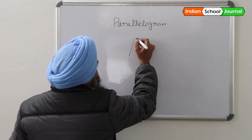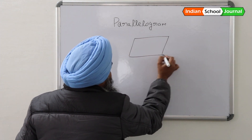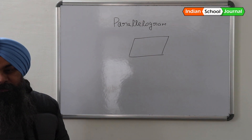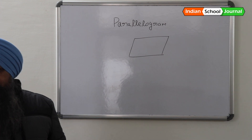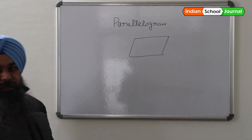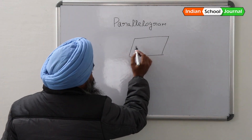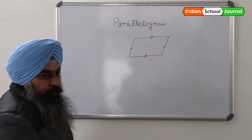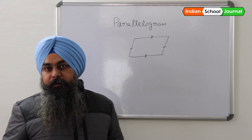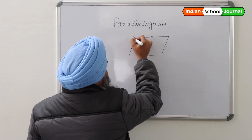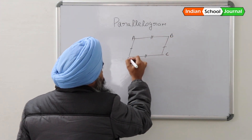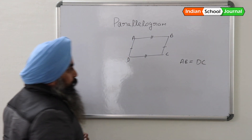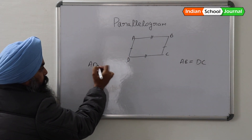Let me draw a parallelogram. A parallelogram is a four-sided figure. Opposite sides are parallel and equal, which means that these two opposite sides should be equal in length. So let us name them A, B, C and D. So AB should be equal to DC and AD should be equal to BC.